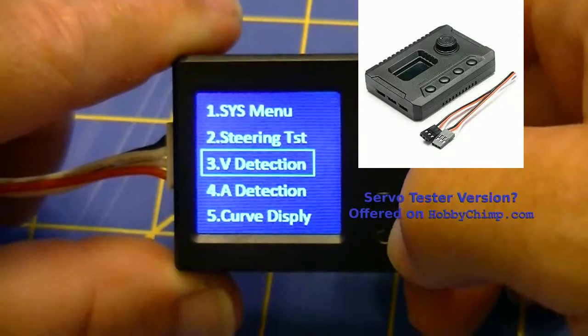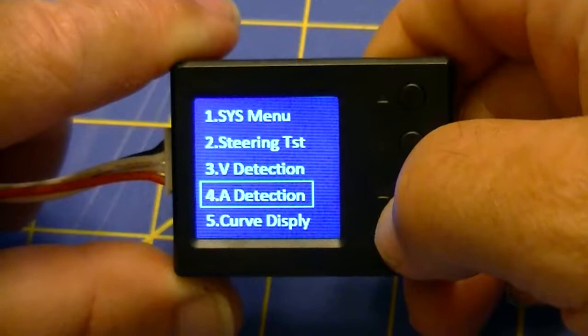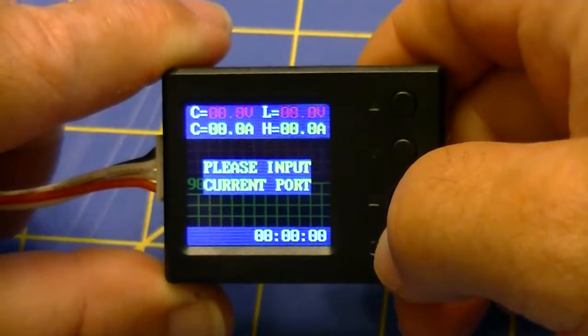The next function is voltage detection, which is a default mode when the battery is connected via the balance leads as I showed a moment ago.